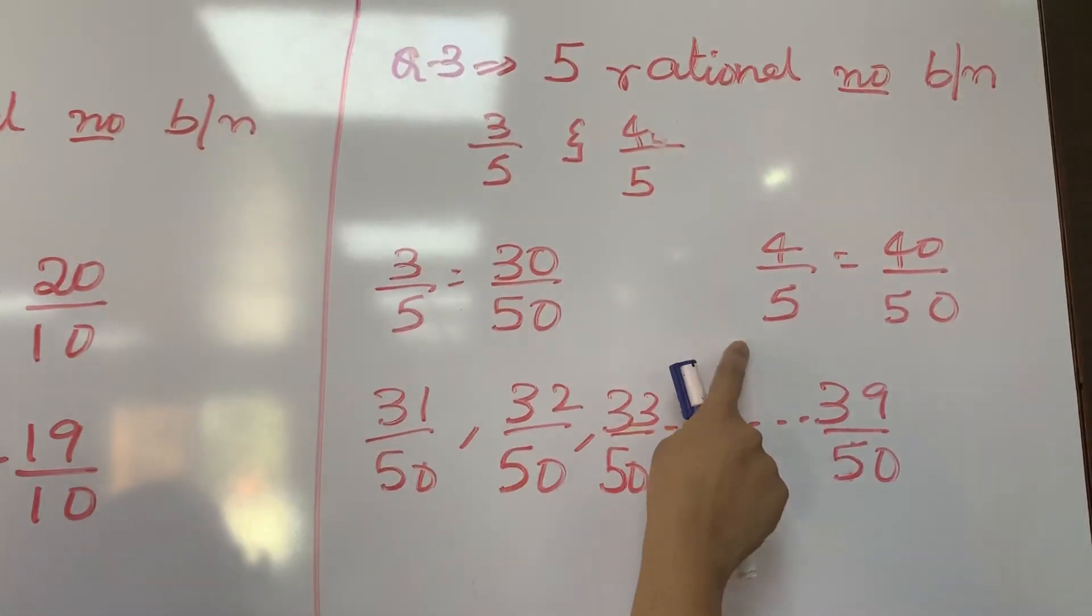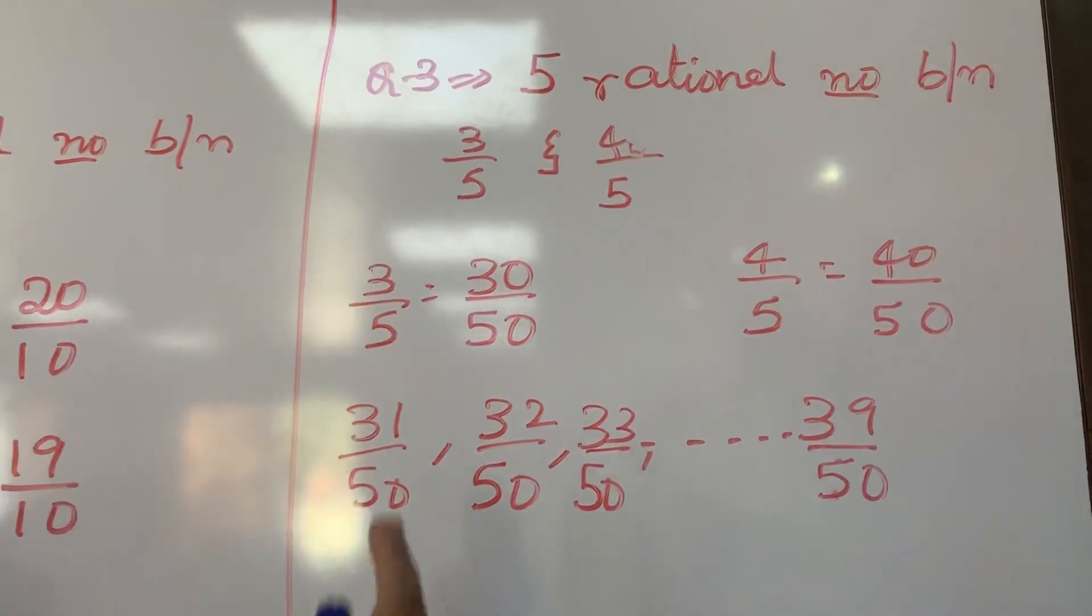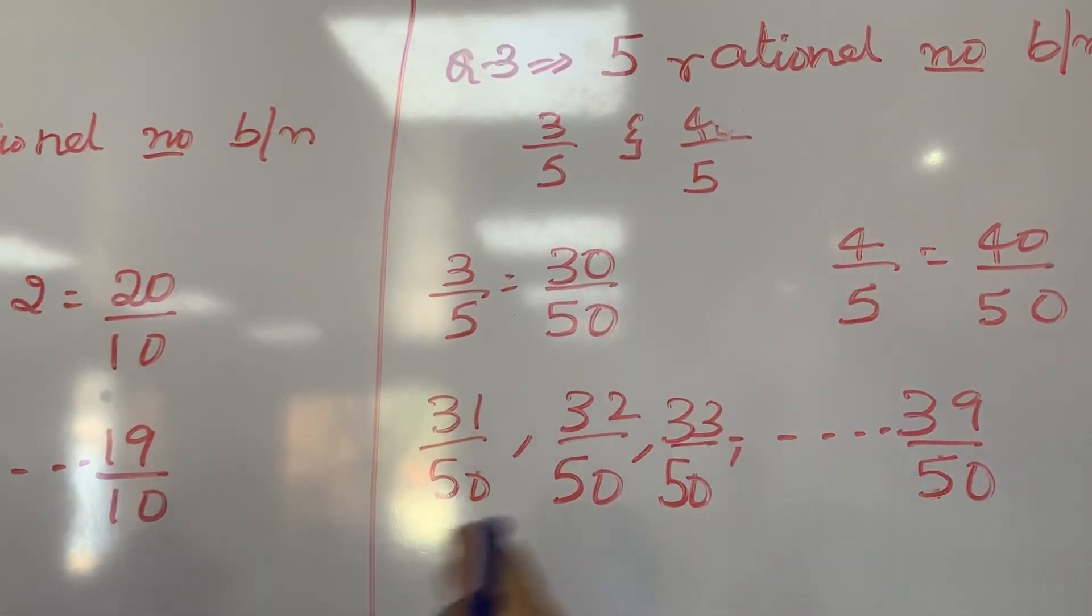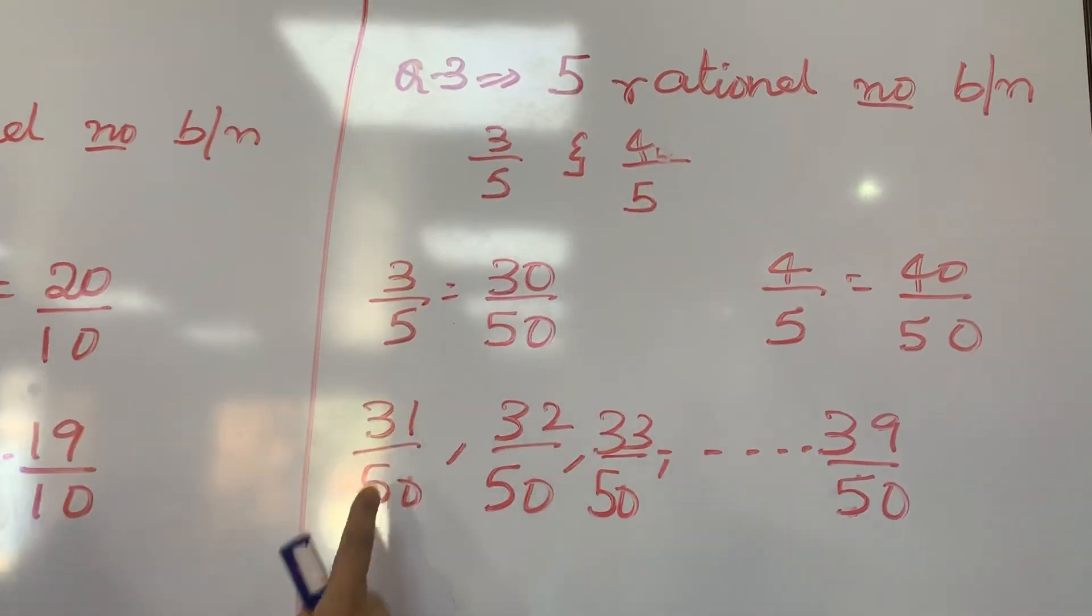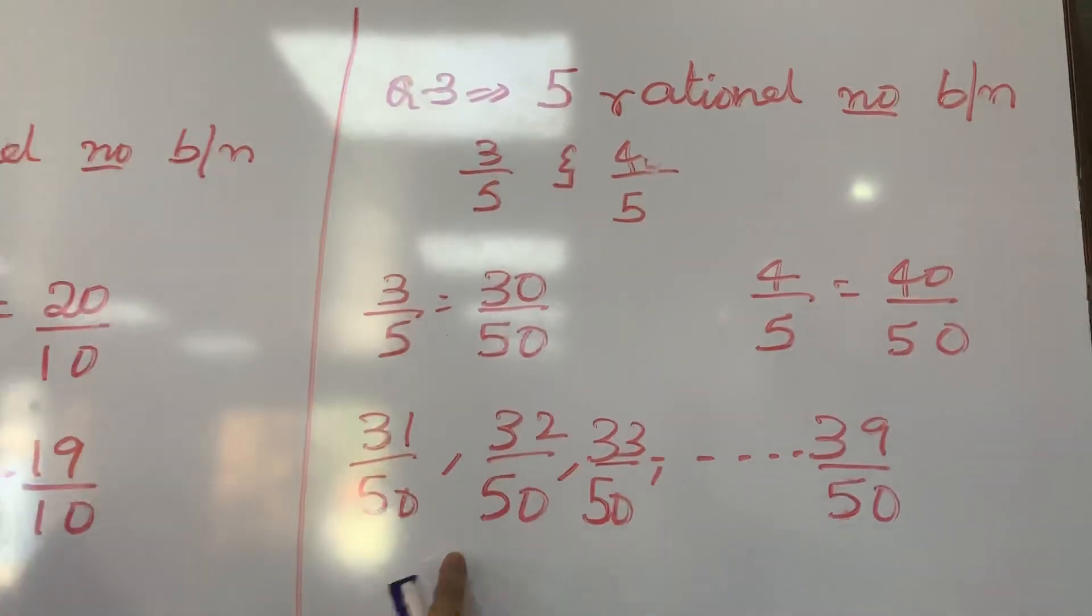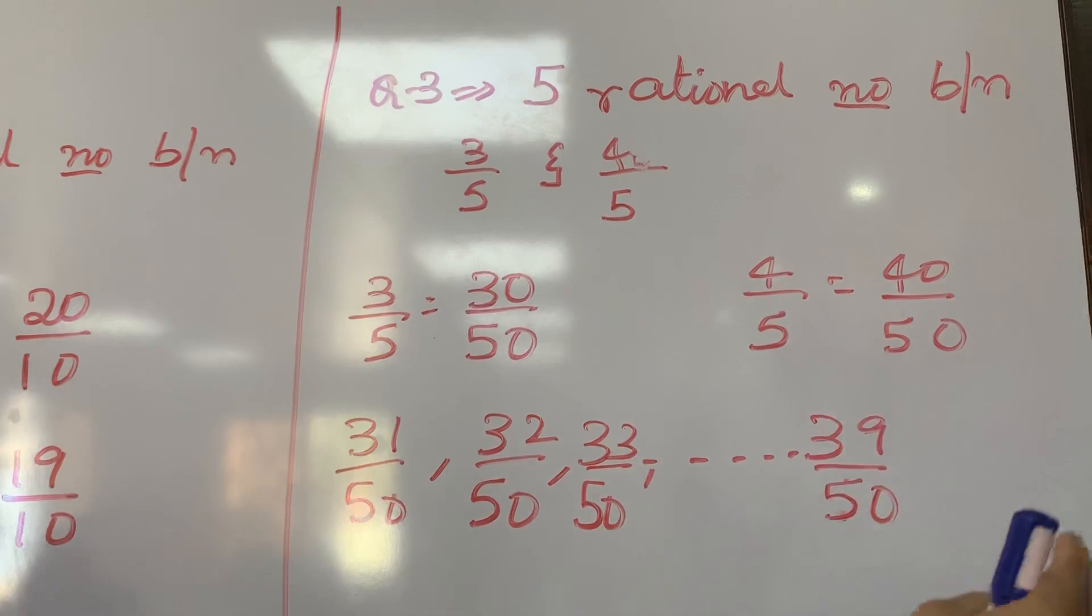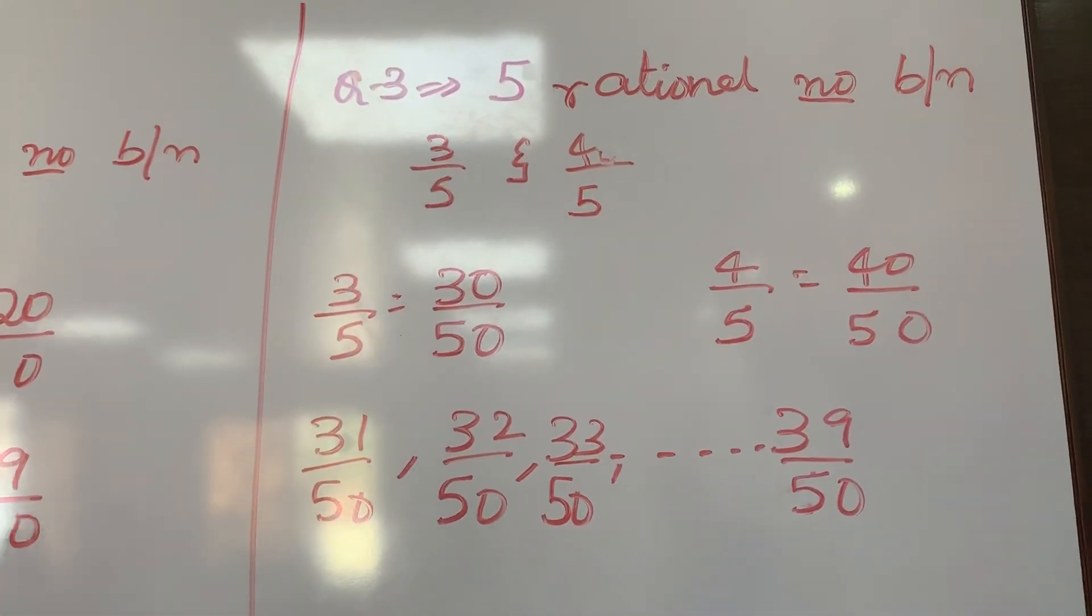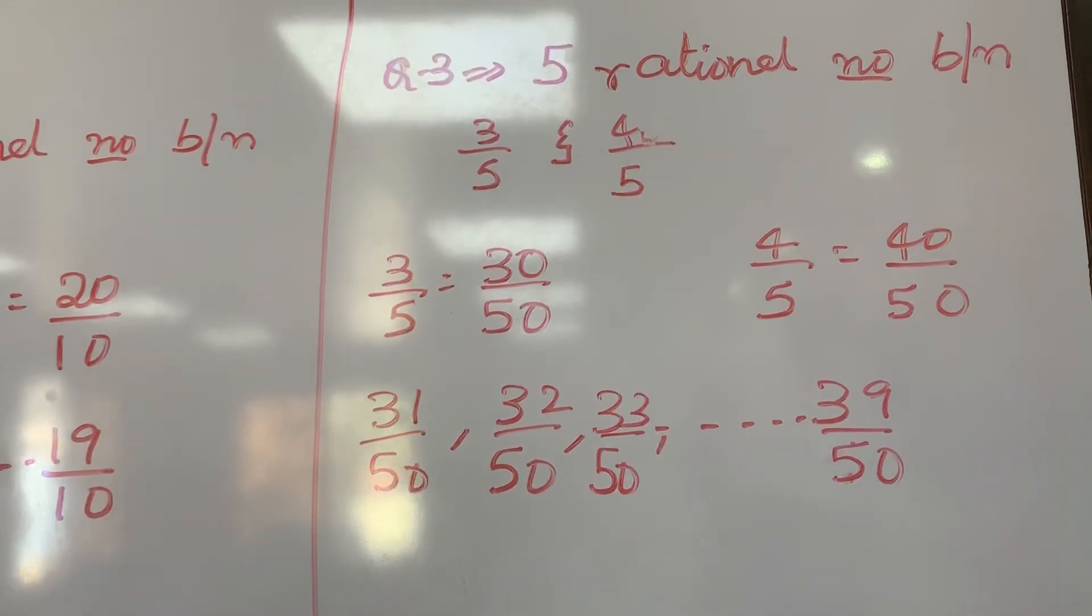And write 4 by 5 as 40 by 50. Now between this you can write from 31 to 39 by 50. You can write so many rational numbers: 31 by 50, 32 by 50, 33 by 50, like that it goes on till 39 by 50. Okay, now let us do some more questions.